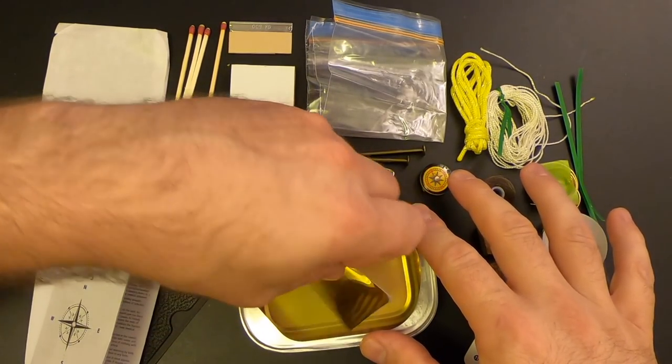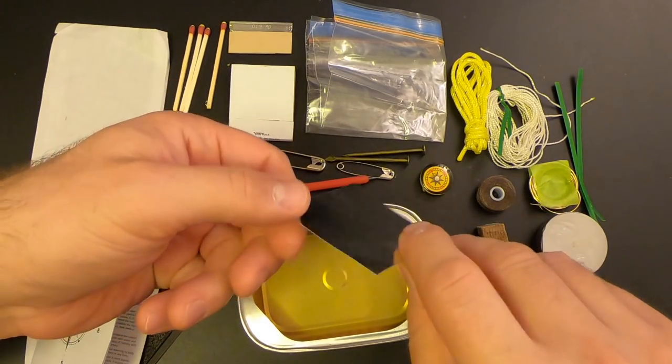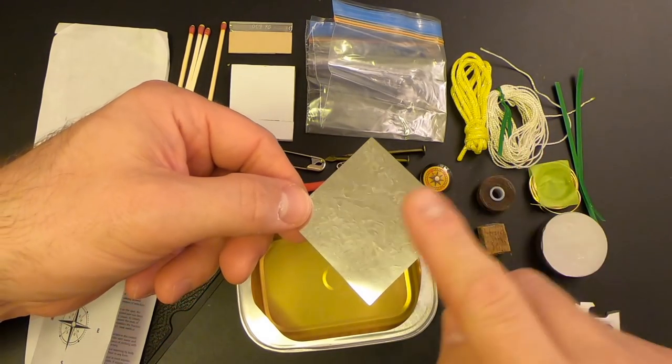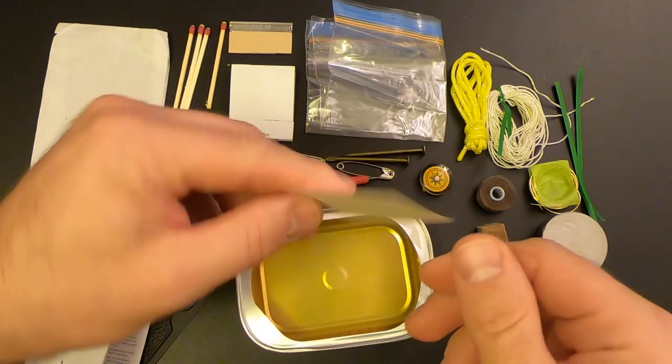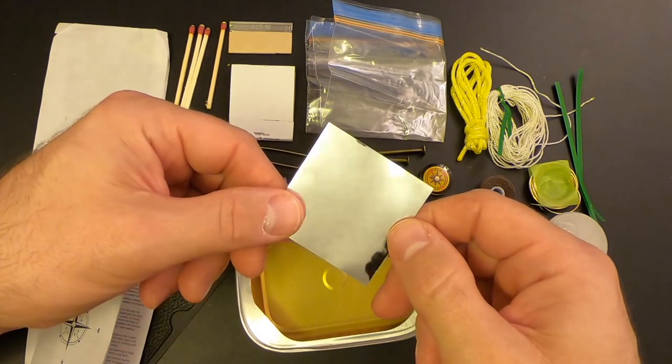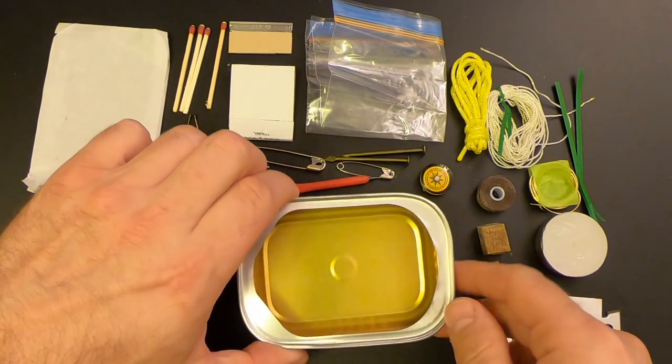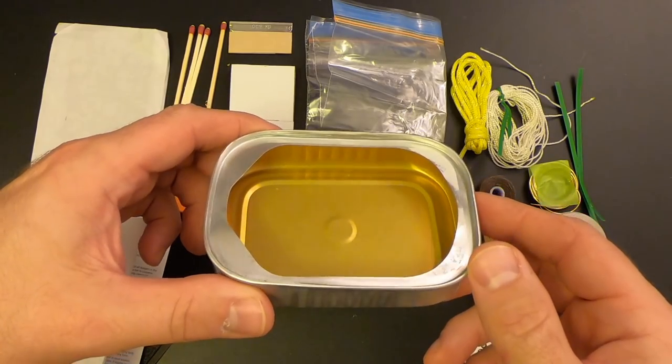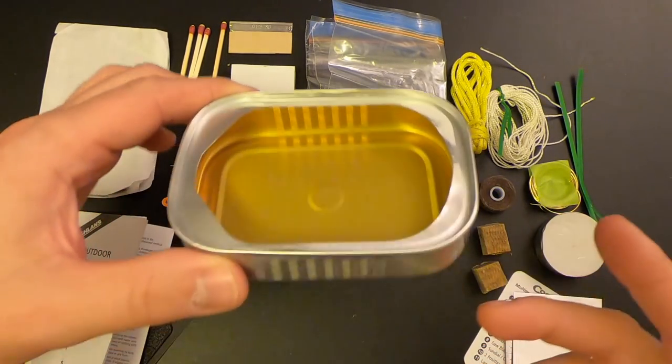And then we've got our signal mirror. Very basic, very cheap. You know, it's basically a piece of paper with a reflective coat on one side and you can peel off the back and stick it on something if you have to. But, you know, it's better than nothing. And then lastly, we've got the tin itself, which again, you could use this to boil water or cook food or use it as a cup or what have you.